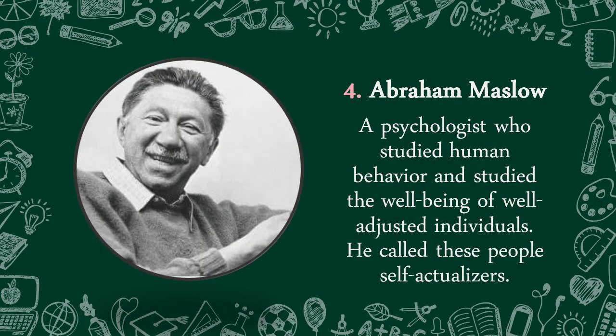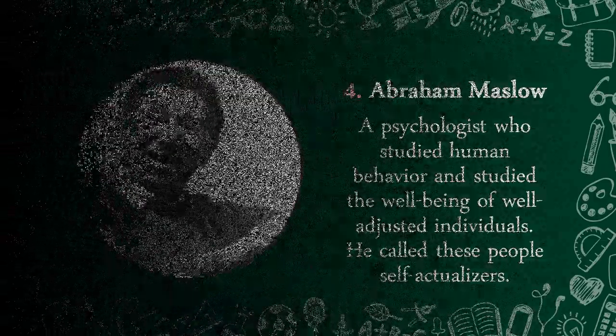Our fourth Theorist is Abraham Maslow. He is a psychologist who studied human behavior and studied the well-being of well-adjusted individuals. He called these people self-actualizers.